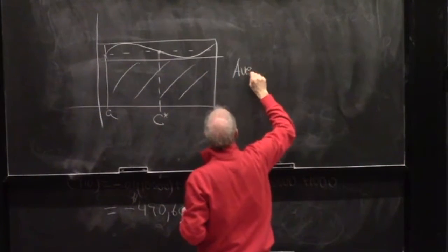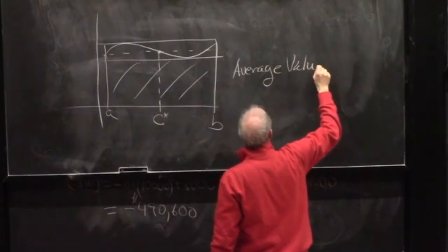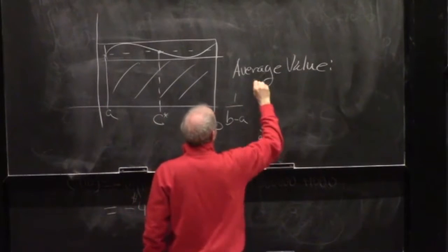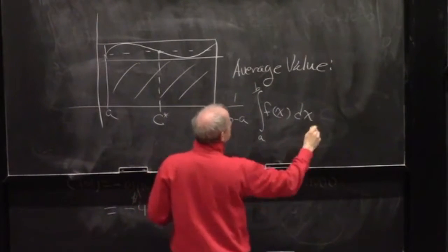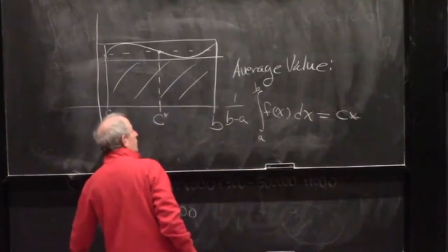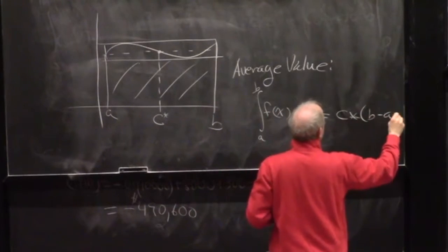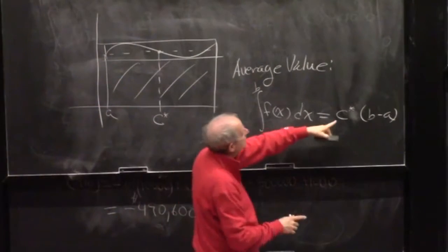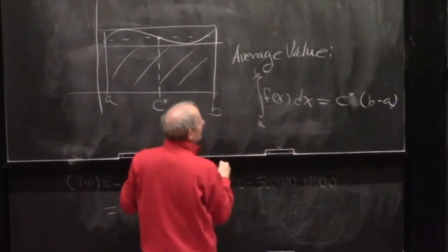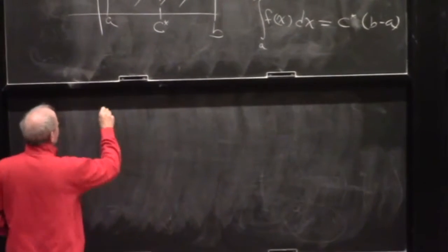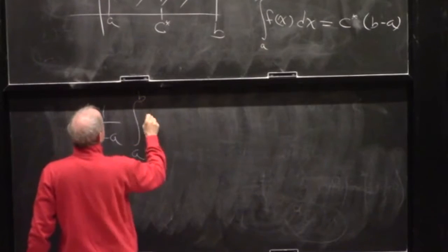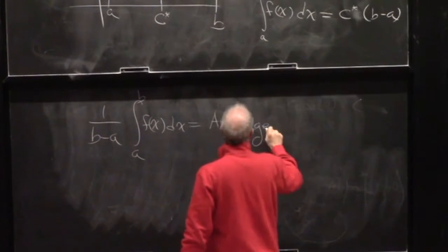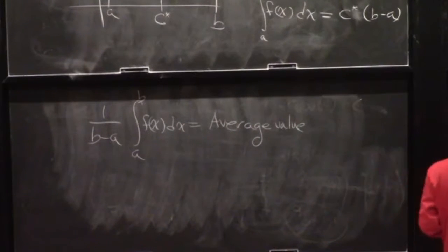The average value is 1 over (B minus A) times the area from A to B — that is, 1/(B−A) times the integral from A to B of f(x) dx. That equals C*, the average value of f(x) on the interval [A, B]. The height times (B−A) gives the area under the curve, so dividing by (B−A) gives the average value.